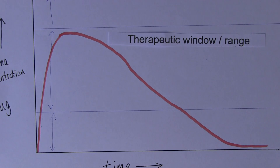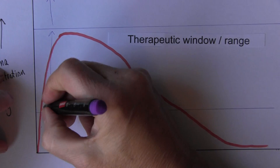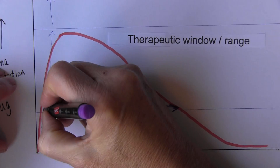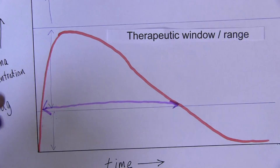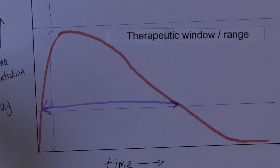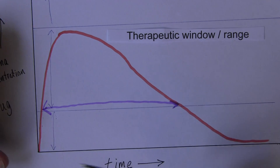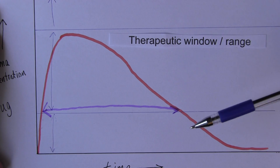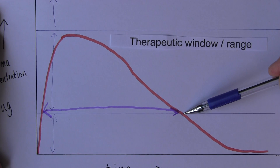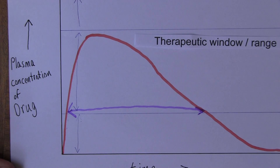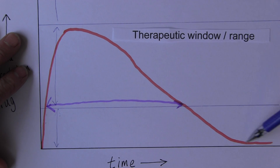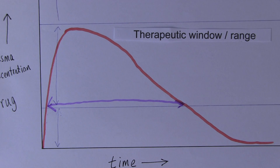The duration of action of the drug — the time the drug is actually going to be active — is from when it enters the therapeutic window to when it drops back out. It's not going to work in the sub-therapeutic range, it will work throughout the therapeutic window, but when metabolism and other processes remove the drug from the plasma, the plasma concentration will fall and we'll lose the efficacy of the drug as it drops back into the sub-therapeutic range.